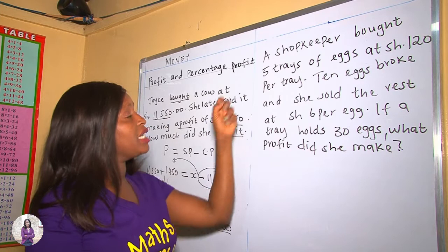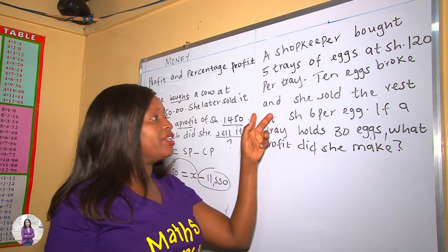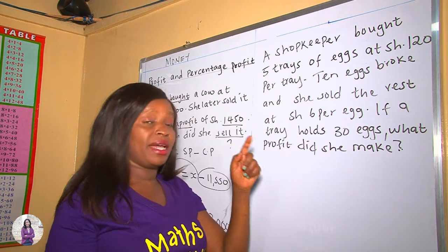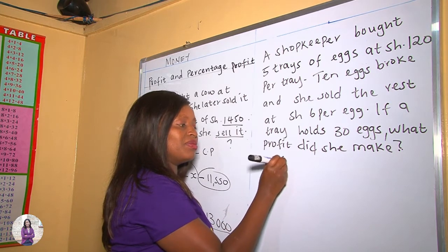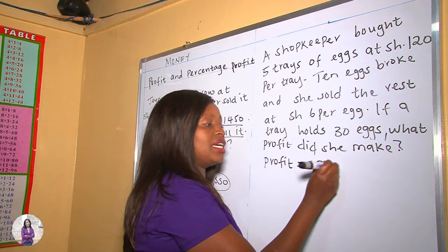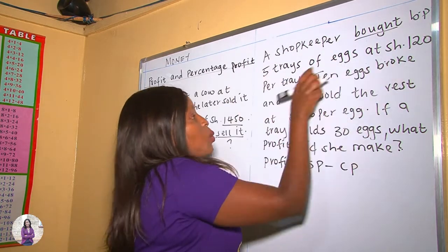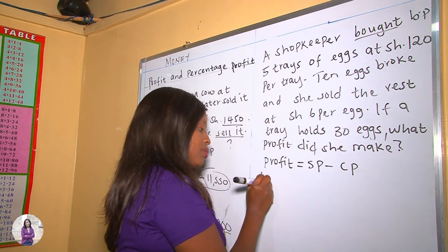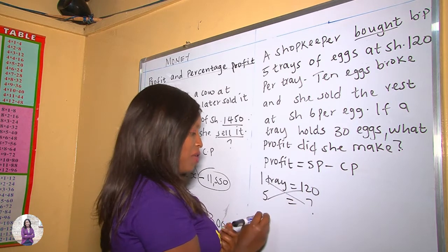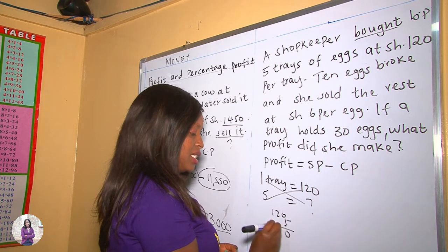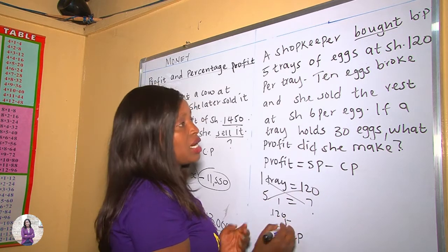In this example, a shopkeeper bought 5 trays of eggs at 120 shillings per tray. 10 eggs broke and she sold the rest at 6 shillings per egg. A tray holds 30 eggs. To get the profit, profit equals selling price take away cost price. She bought 5 trays at 120 shillings each, so 5 times 120 equals 600 shillings. That is the cost price.